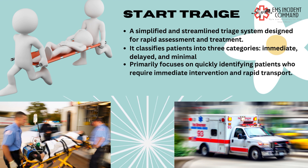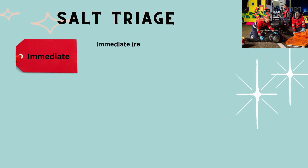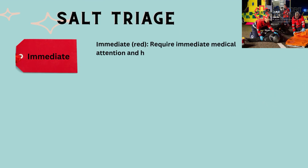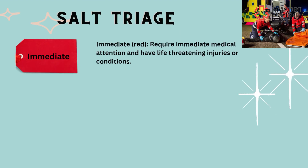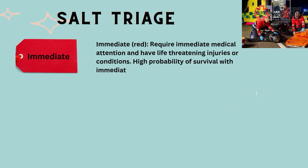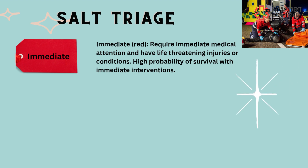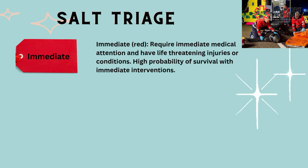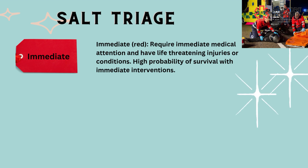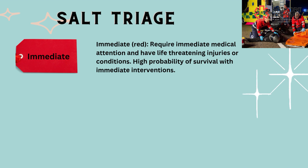Next, let us discuss the differences in color coding. SALT uses color-coded tags to categorize patients based on their severity and priority. The tags include red (immediate), yellow (delayed), green (minimal), and black (expectant). Immediate red patients require immediate medical attention and have life-threatening injuries or conditions, with a high probability of survival with immediate intervention. Delayed yellow patients have significant injuries that are not immediately life-threatening and can safely wait a short period.